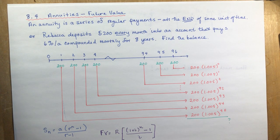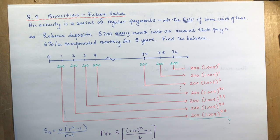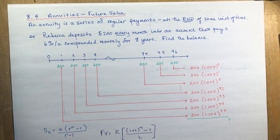8.4 is annuities, future value. An annuity is a series of regular payments at the end of some unit of time. You need to make a clear distinction between what is simple compounding interest or a compound interest question where you put money in the bank and leave it there and don't touch it again, as opposed to an annuity where you're going to make a payment every interval, a regular interval. It may be every month, the end of every week, or once a year, but you're doing it more than once and that's what defines an annuity.